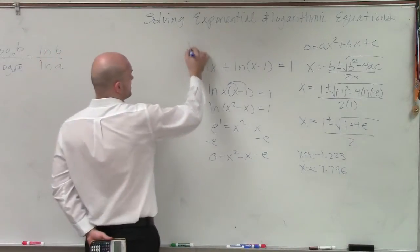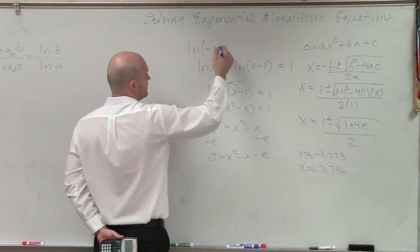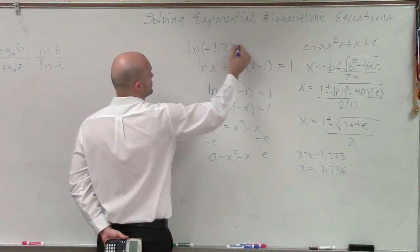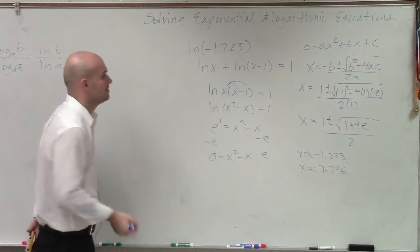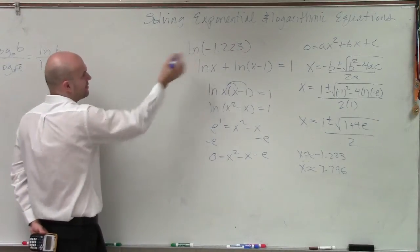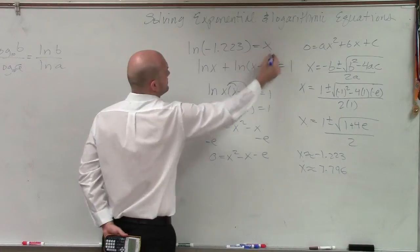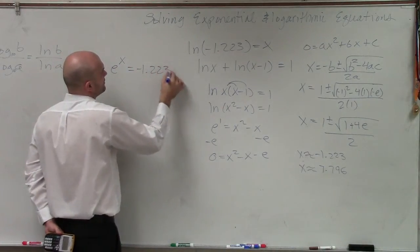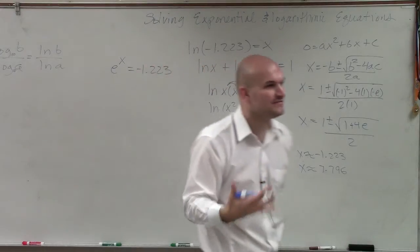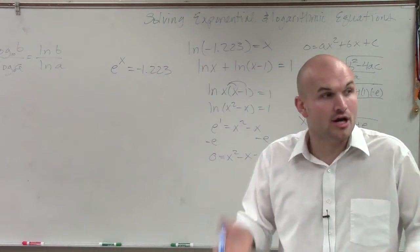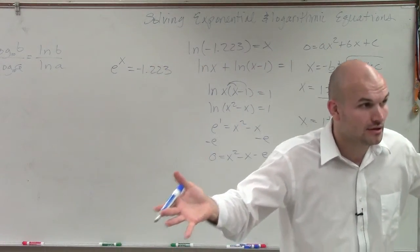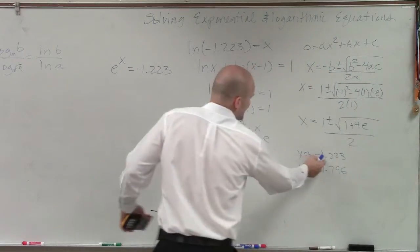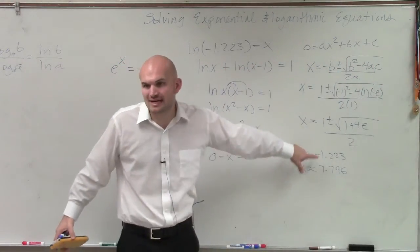Let's think about that. If I was going to plug this in, ln of negative 1.223, is that even possible? Think about it. Let's just pretend ln equals x. So therefore, e raised to what number equals negative 1.223? Is that possible to have a negative? Is it possible to take e, raise it to a power, and equal negative? No. So therefore, this negative number is what we call an extraneous solution.